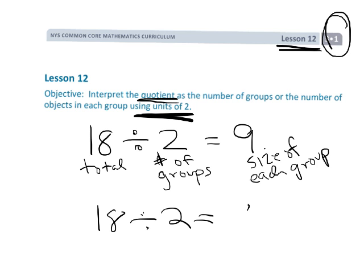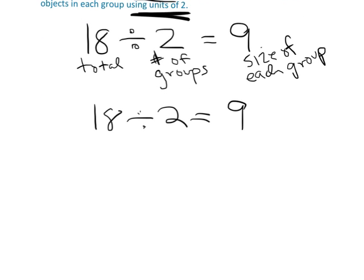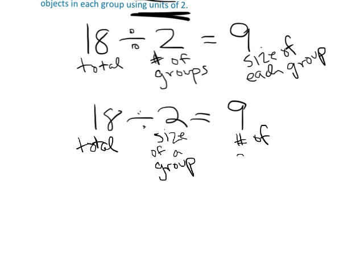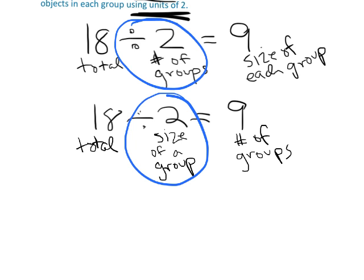Or, 18 divided by 2 equaling 9 could mean that 18 is the total, 2 is the size of a group, and 9 is the number of groups needed. So in this lesson, dividing by 2 sometimes means the number of groups and sometimes the size of a group.